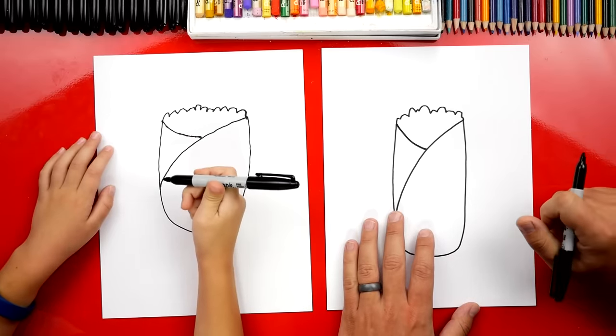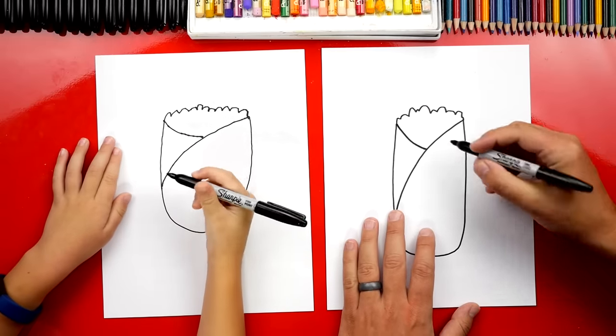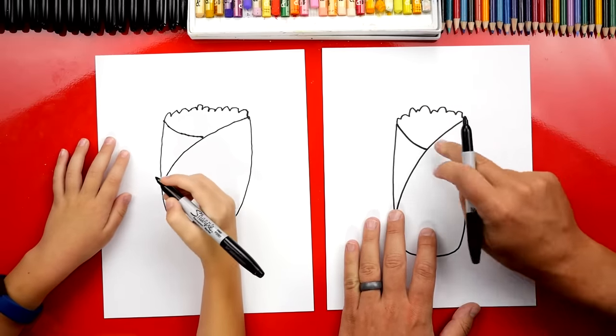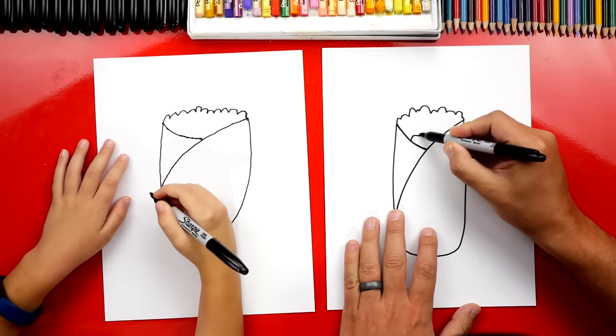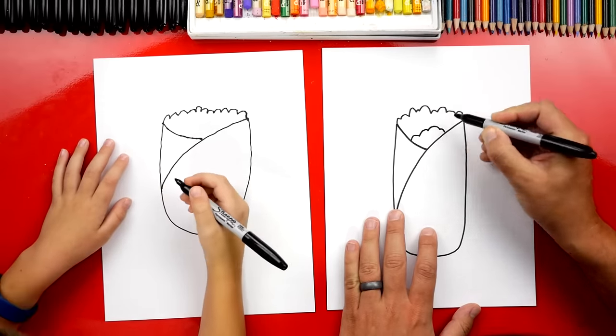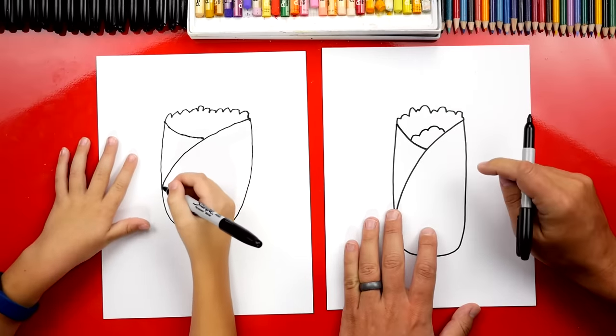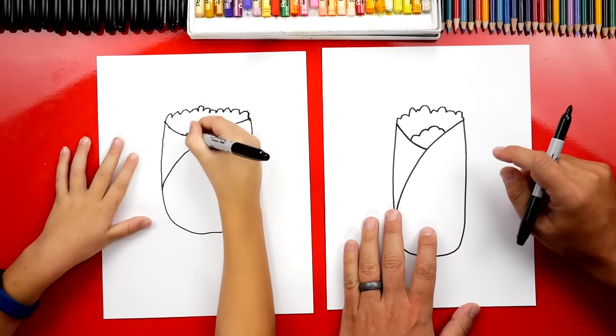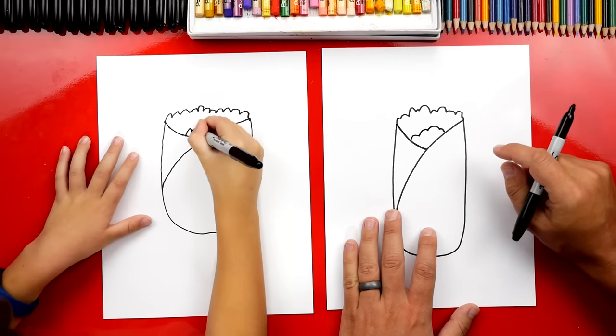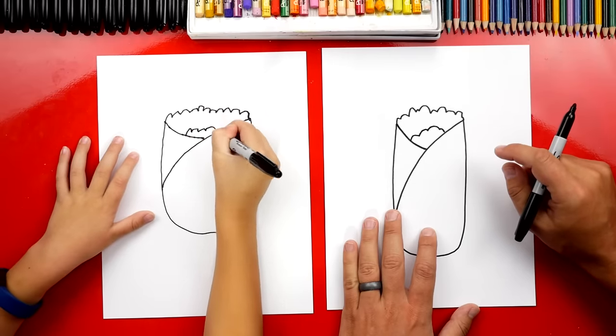All right, now what else is inside of a burrito? Beans. We're going to draw another bumpy line. It's going to look a lot like the lettuce, and we're just going to draw it right here in between at the very bottom of our Y, so we can leave room for some other stuff we're going to add. Good job.